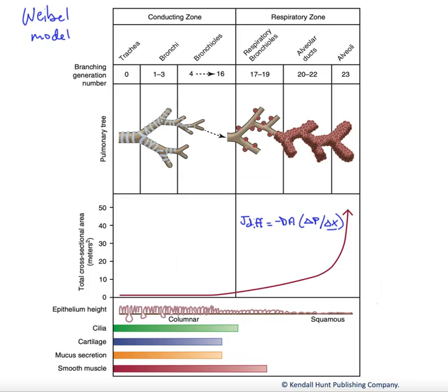In this figure, we want to look at the Weibel model of the respiratory tract. The Weibel model shows the branching pattern of the respiratory tree and how it's divided up into two main zones.